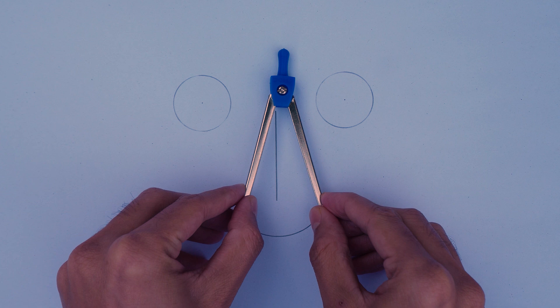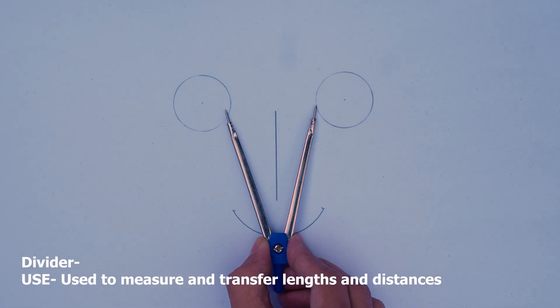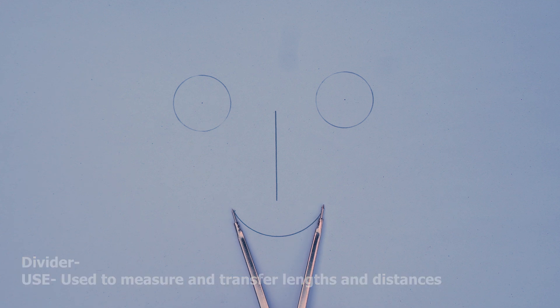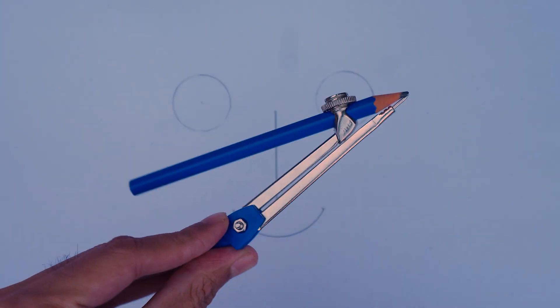Now some of us might have used this thing known as a divider. It is used to measure and transfer lengths between drawings. Why we never used it is because whatever we can do with a divider, we can do with a compass.